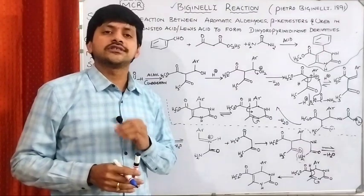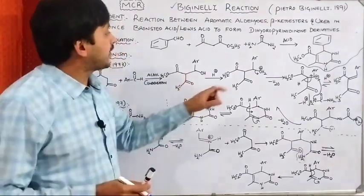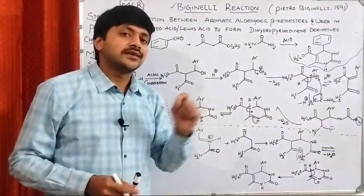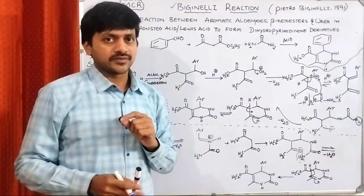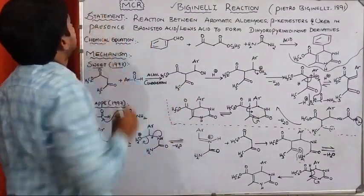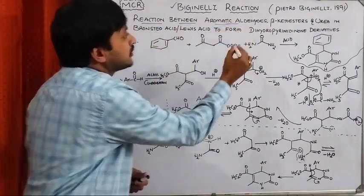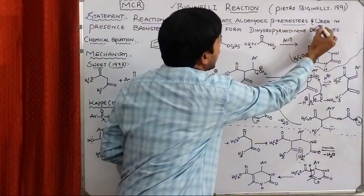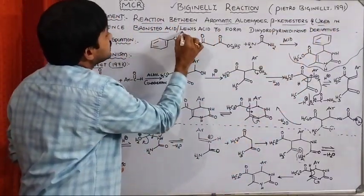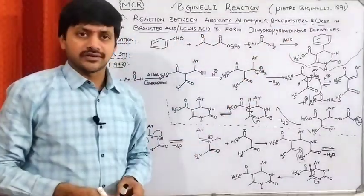Nowadays, most of the researchers have focused on the synthesis of these dihydropyrimidinone derivatives because of their relationally important biological activities. The reaction is between aromatic aldehydes, beta-ketoesters, and urea in the presence of a Brønsted acid or Lewis acid to form dihydropyrimidinone derivatives.